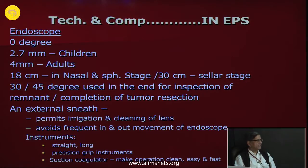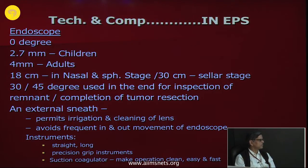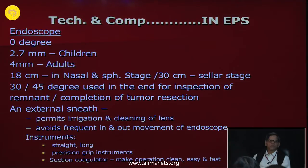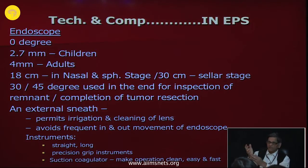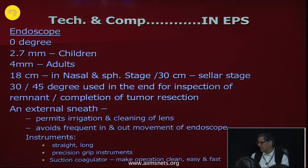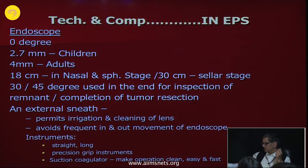An endoscope with external sheath is useful as it permits irrigation and cleaning of the lens, avoiding frequent in-and-out movements and reducing surgical time. Instruments used are straight and long, curved at the tip — otherwise you will not be able to see the tip. Precision grip instruments are always preferred because power grip instruments give no control over depth; with precision grip your palm rests and you maintain control. The suction coagulator is very important as it makes the operation clean, easy, and fast.